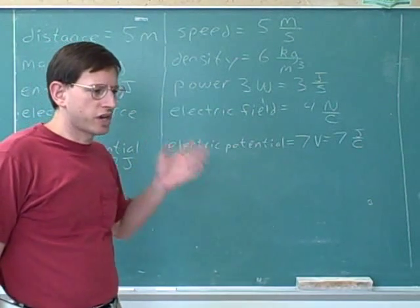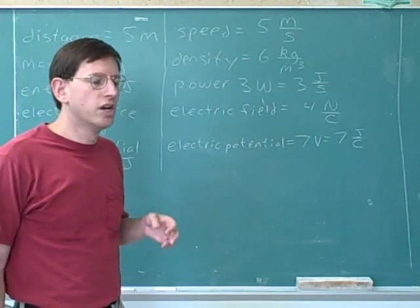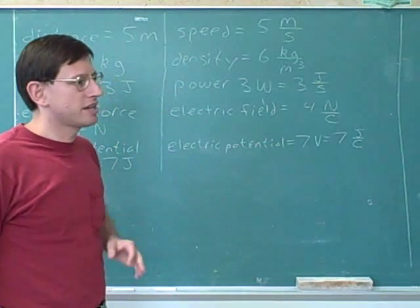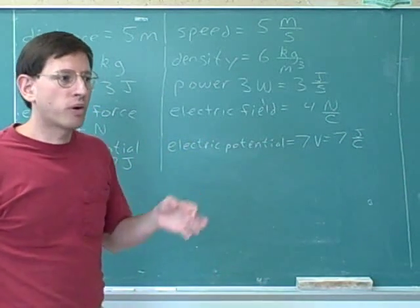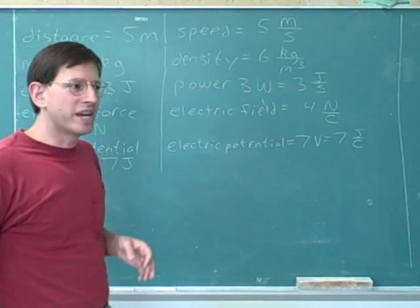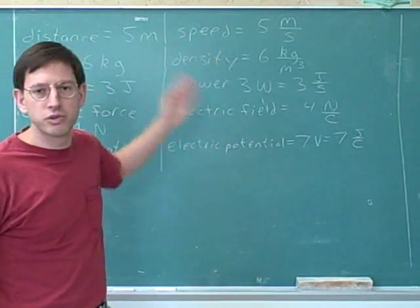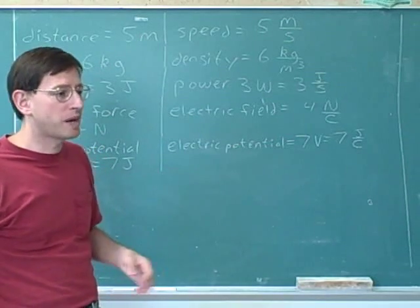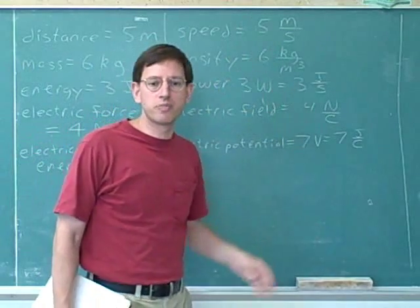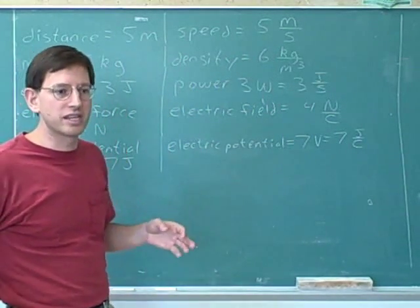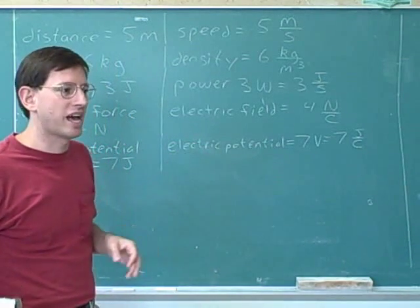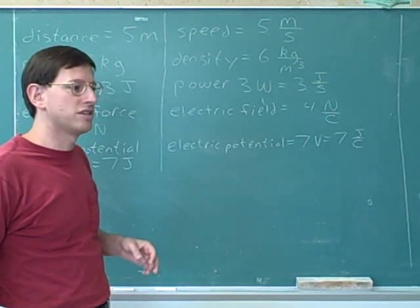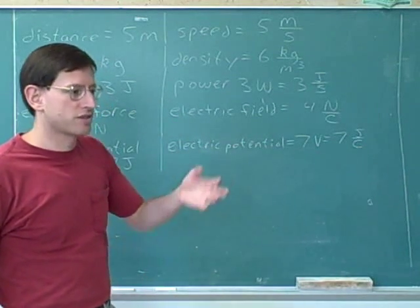Where does this information usually fit into a normal physics or chemistry class? The answer is that this concept is usually not really taught at all — not because it's not important, but because instructors just assume that people already know how to interpret ratio units. Your instructor is probably going to assume, perhaps without even realizing it, that you understand how to interpret ratio units. So this is probably never going to be covered explicitly in your lectures, and there's likely no section of your textbook that covers it — but I think that's a mistake, because a lot of students do not understand ratio units or have a good intuition for them.